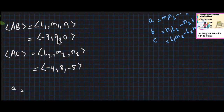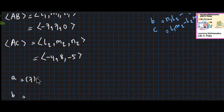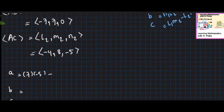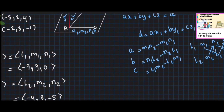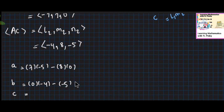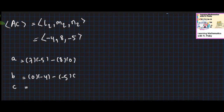Now computing cross product: A is M1·N2 minus M2·N1. N2 is 7, into minus 5; minus M2 which is 8 into 0. B is N1·L2 minus N2·L1: M1 is 0, L2 is minus 4. Then L2 is minus 5, L1 is minus 7.